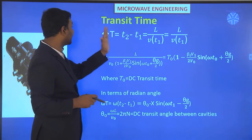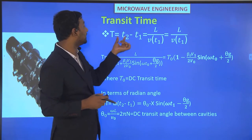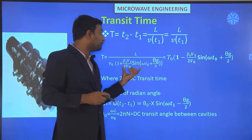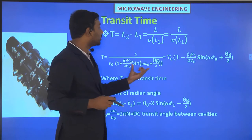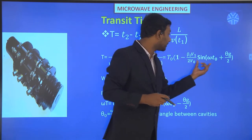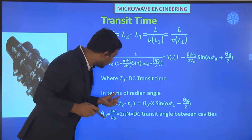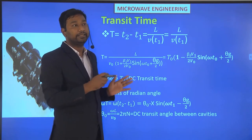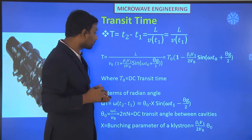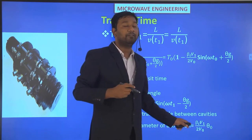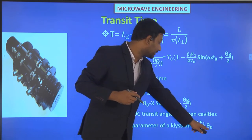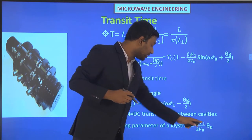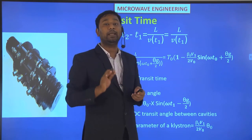One cavity is the buncher cavity and another is the catcher cavity. The transit time T2 minus T1 is derived from L/vT1 with the approximation applied. The bunching parameter X of the klystron is defined as X equals β_i·V1·θ0 / (2V0). So X is the bunching parameter of the klystron.